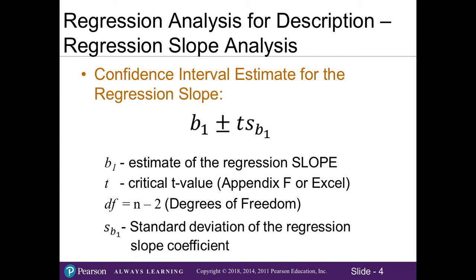To help describe the relationship between our independent and dependent variables, we need to develop a confidence interval estimate for the regression slope. We learned how to do confidence interval estimates in Chapter 8, so this should look familiar. Our B1, which is the estimate of the regression slope, is our point estimate. We have our plus or minus, our t critical value can be found using Appendix F or Excel, and we need to know that the degrees of freedom for our critical t value when doing regression analysis is n minus 2. And then our SB1, which we learned about in Section 14.2, is the standard error, also known as the standard deviation of our regression slope coefficient.